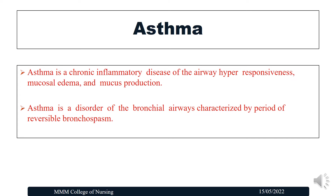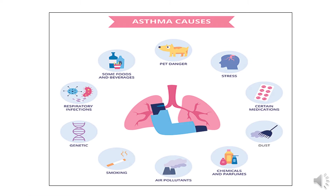The next respiratory disorder is asthma. Asthma is a chronic inflammatory disease of the airway characterized by hyper-responsiveness, mucosal edema, and mucus production — a disorder of the bronchial airways characterized by periods of reversible bronchial spasm. Causes of asthma include allergens such as pet dander, stress, certain medications, dust allergy, chemicals and perfumes, air pollution, smoking, genetic factors, respiratory infections, and some food and beverages.